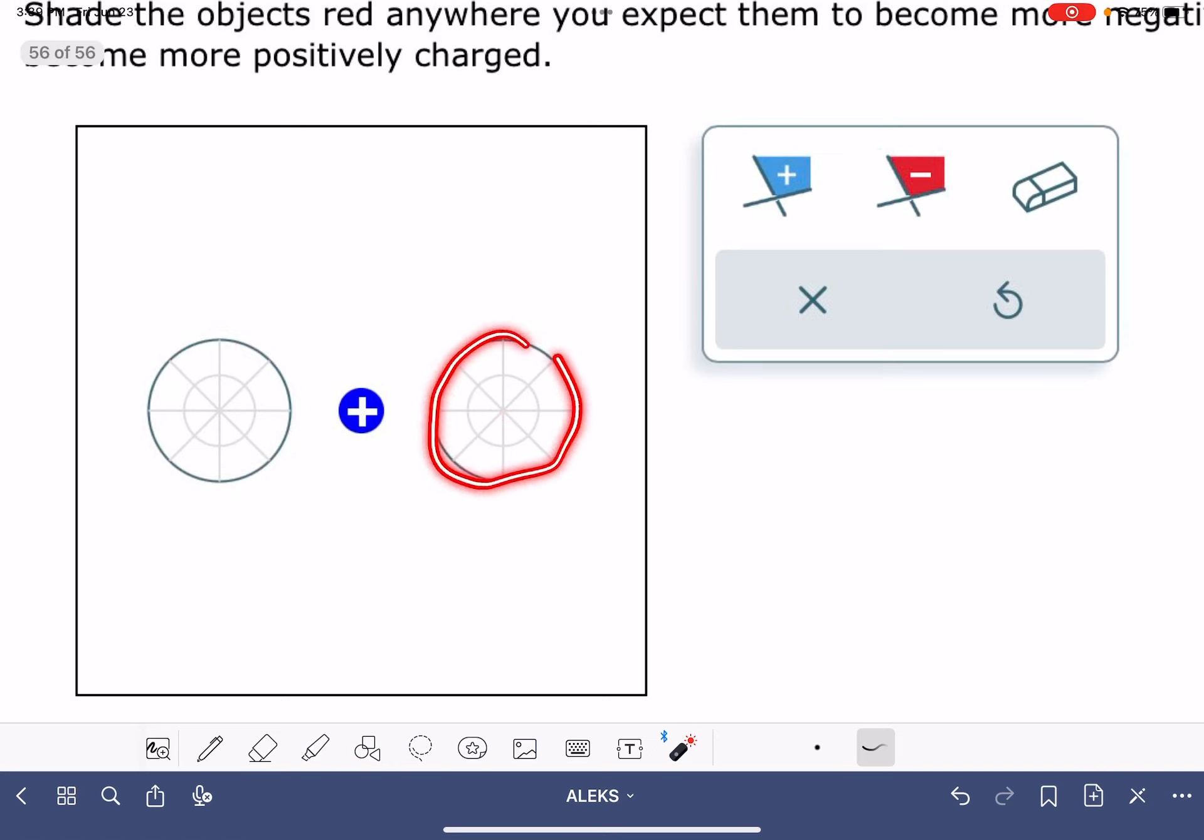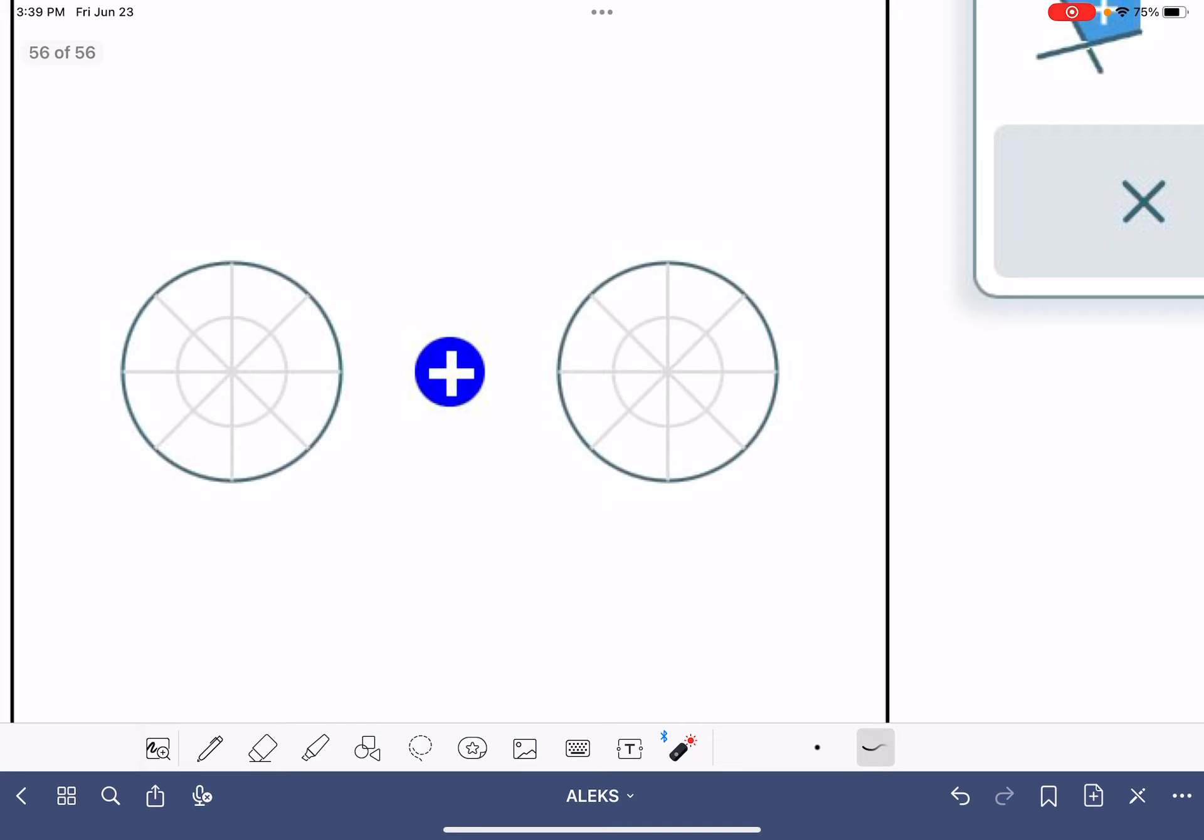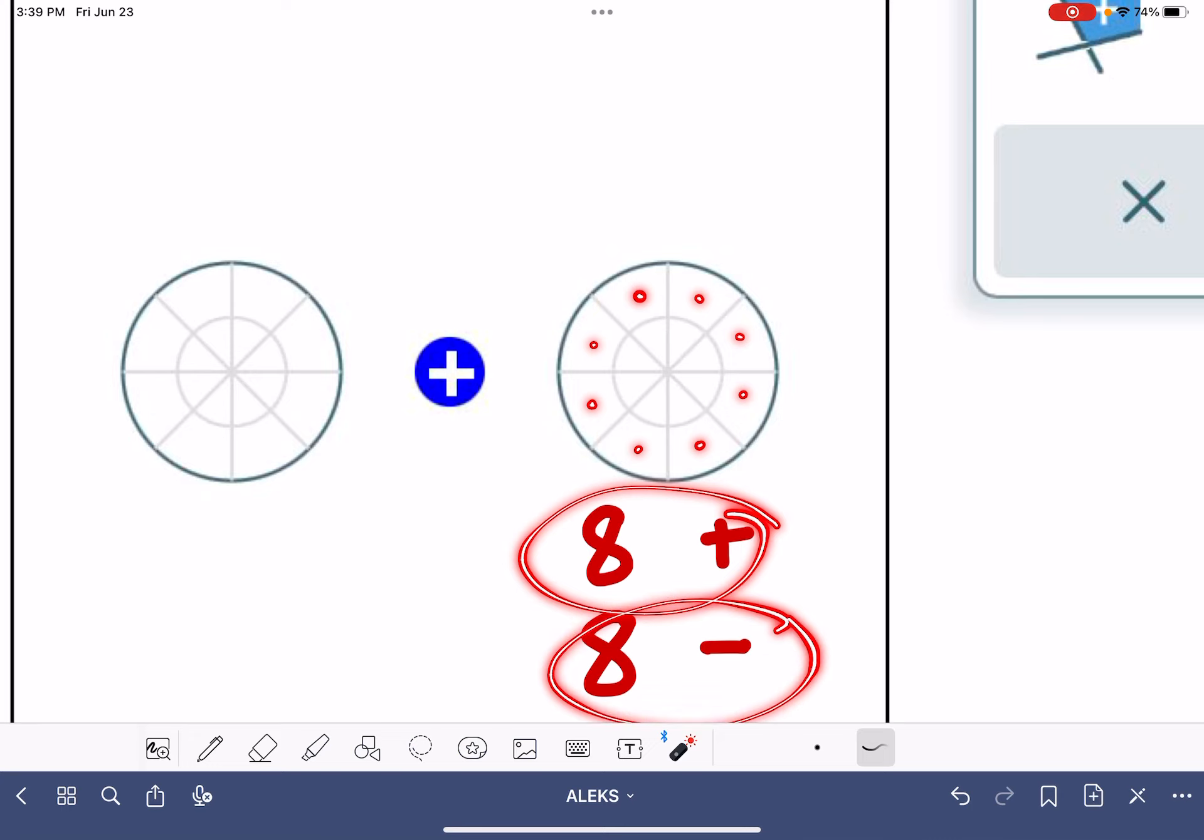Inside this object, the total number of positive charges equals the total number of negative charges. In this object, I have a total of 16 empty spaces. That means this particular object will have eight positive areas and eight negative areas because the object is neutral.